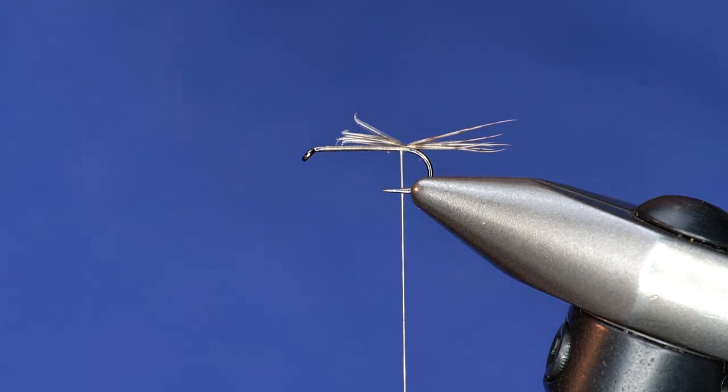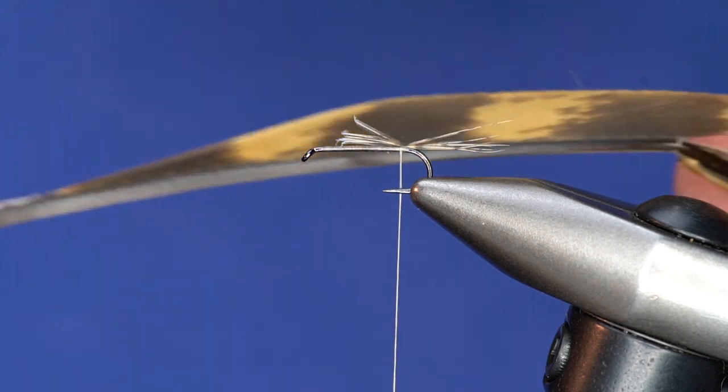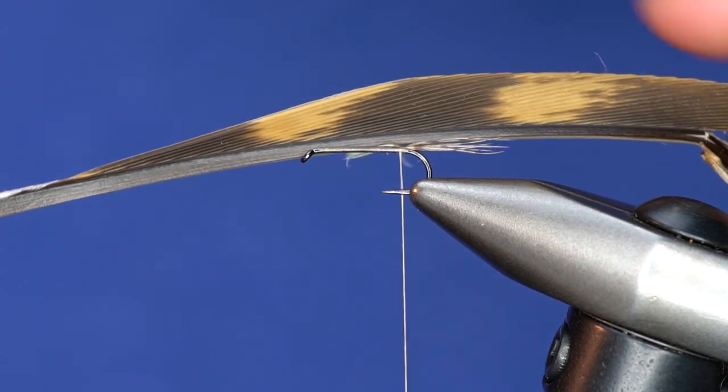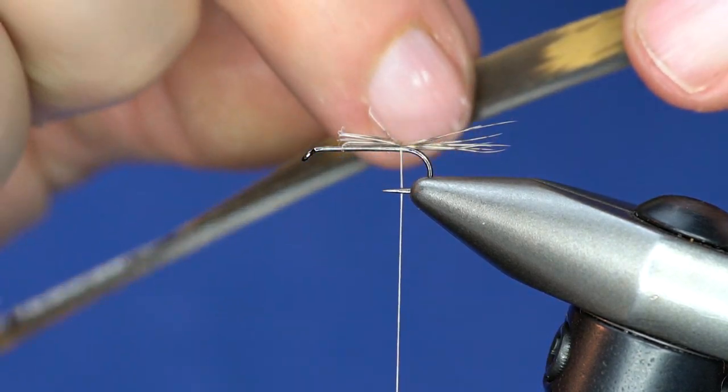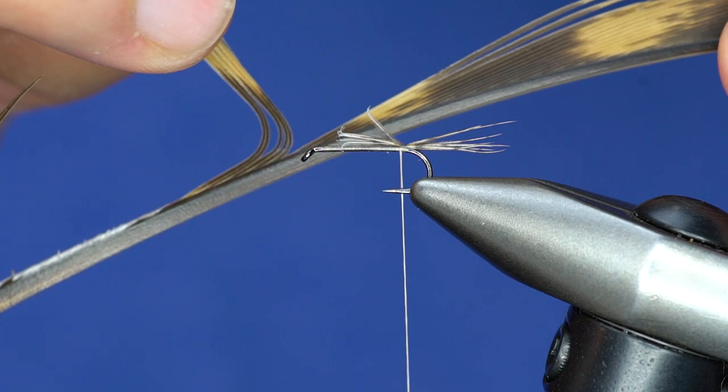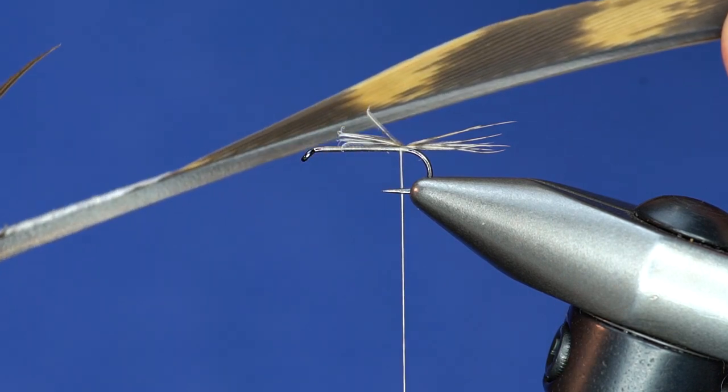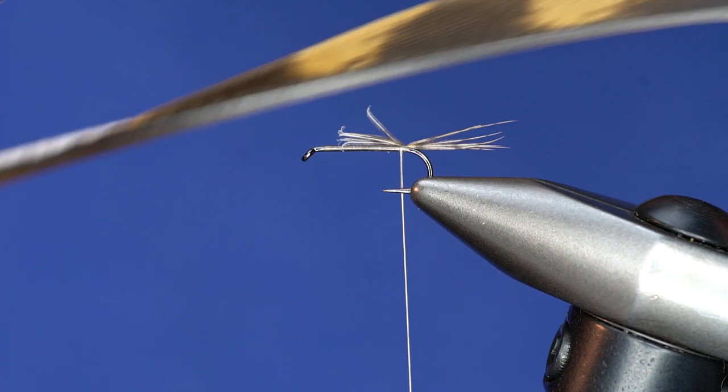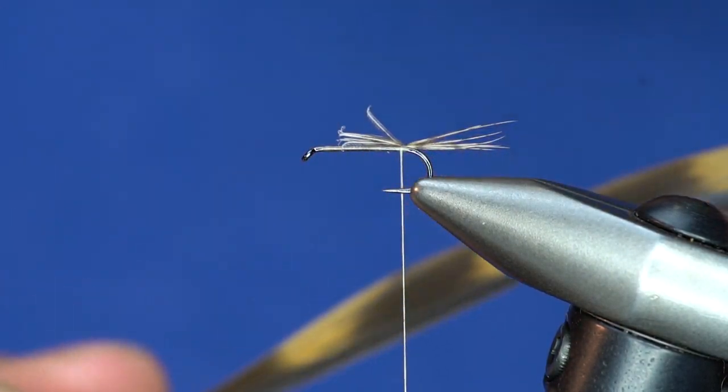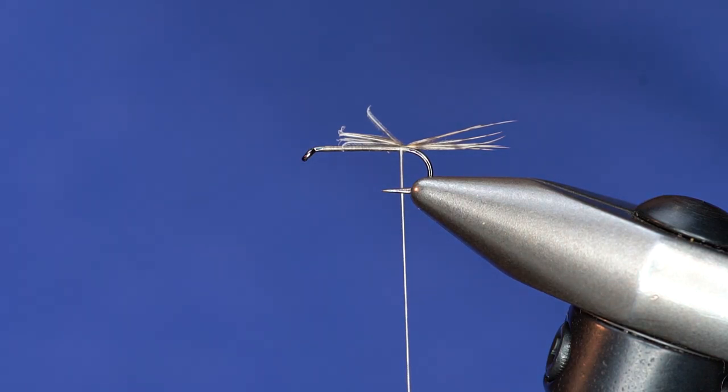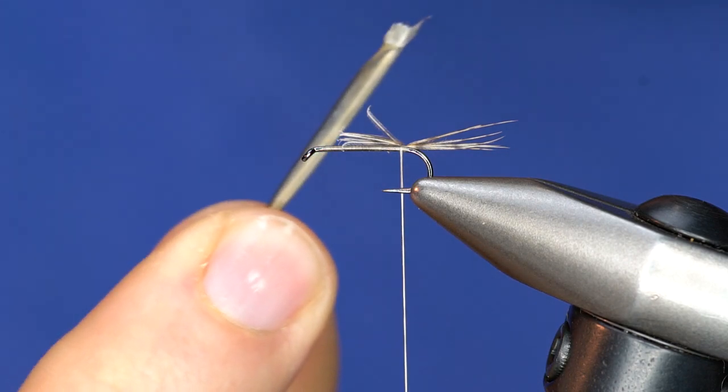So the body on this one is going to consist of some Nature Spirit Barred Wild Turkey Biotts. So what this is, it's kind of hard to see but you can actually see it pretty good. You'll notice that these turkey biots are barred. So along the length of each of the actual biots you've got some nice dark barring. So what I'll do is I'll choose a fiber that has that barring closer to the tip, or it depends on the size of pattern I'm going to be tying. And then this is what you end up with.